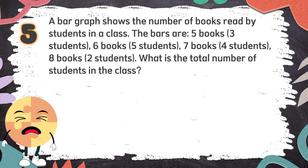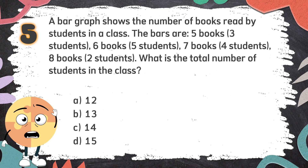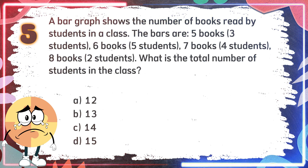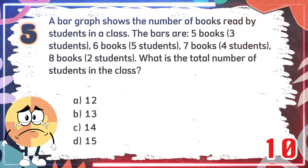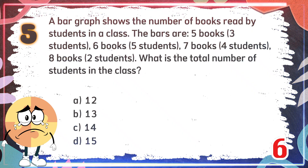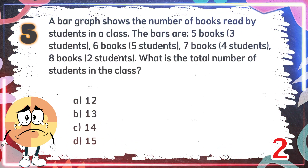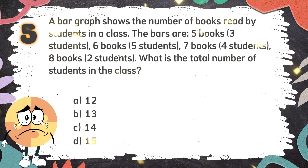Number 5: A bar graph shows the number of books read by students in a class. The bars are: 5 books — 3 students, 6 books — 5 students, 7 books — 4 students, 8 books — 2 students. What is the total number of students in the class? The choices are A. 12, B. 13, C. 14, D. 15. The correct answer is C. 14.